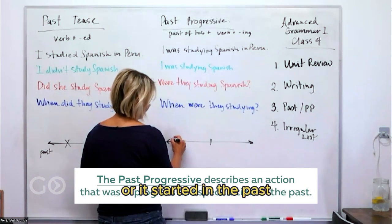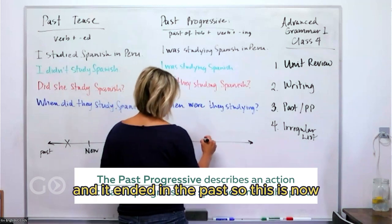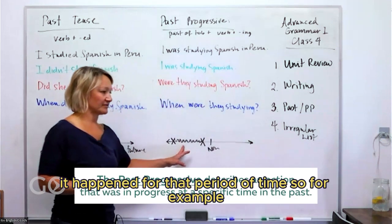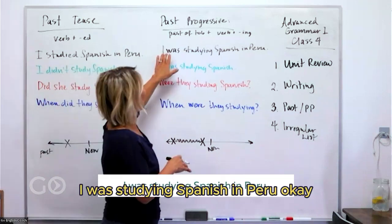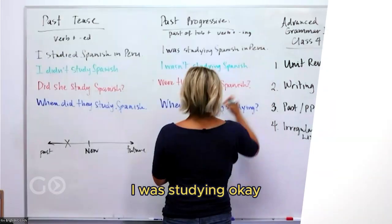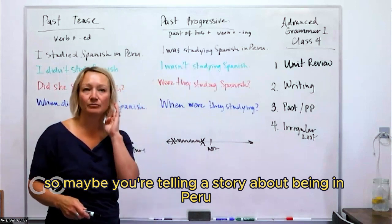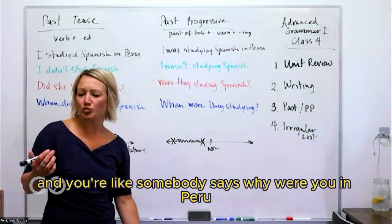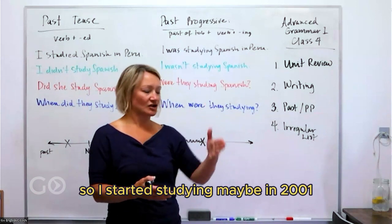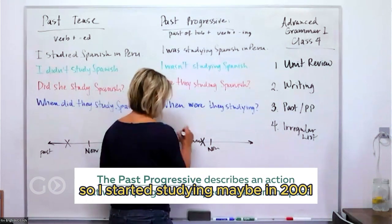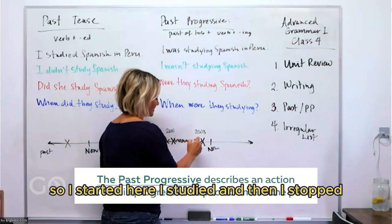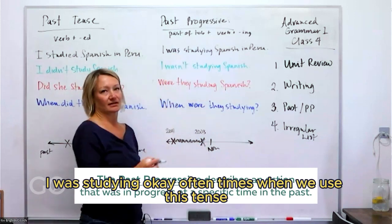Past progressive happened in the past — it started in the past and ended in the past. It happened for a period of time. For example, 'I was studying Spanish in Peru.' Maybe you're telling a story: someone asks why you were in Peru, and you say 'I was studying.' Maybe you started in 2001 and stopped in 2003 — that's past progressive.